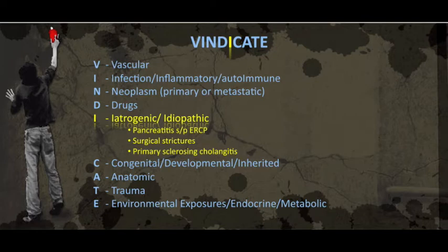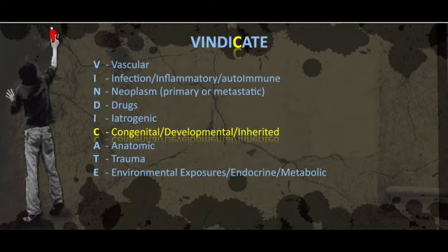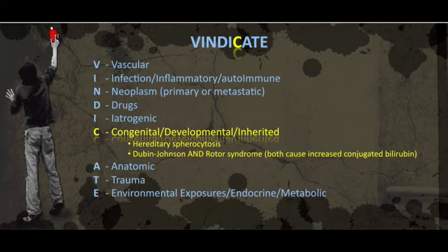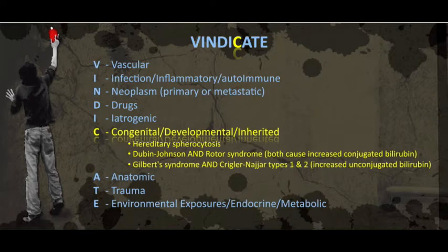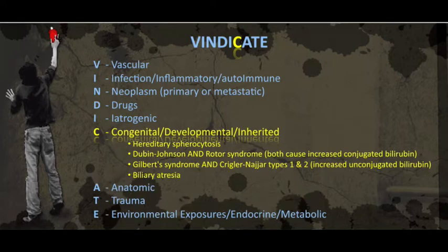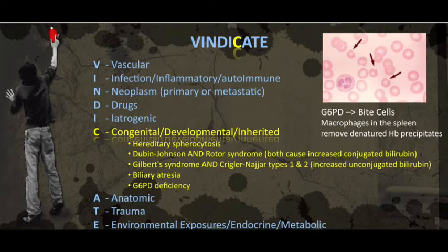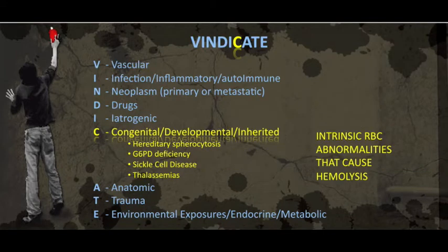C is for congenital, developmental, and inherited. We have the intrinsic red blood cell disorders, starting with hereditary spherocytosis. Then Dubin-Johnson and Rotor syndrome, which are causes of increased conjugated bilirubin. Gilbert's and Crigler-Najjar types 1 and 2, causing increased unconjugated bilirubin. Next, biliary atresia, common in newborn infants. And finally, G6PD deficiency, another cause of intrinsic red blood cell deficiency. To be complete, there is sickle cell disease and thalassemias as well.